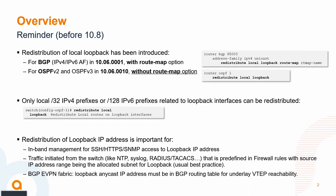Only loopback interfaces can be redistributed as local — though local could also be something else, like connected subnets using /32. Redistribution of loopback addresses is important for inbound management: SSH, HTTPS access through the loopback of the system. Traffic initiated by the switch, like syslog, may need to pass through firewalls where only source interfaces in the loopback range are permitted.